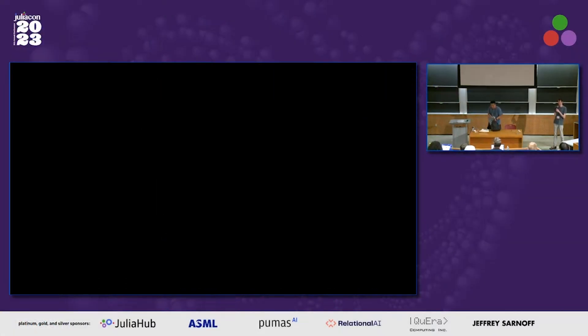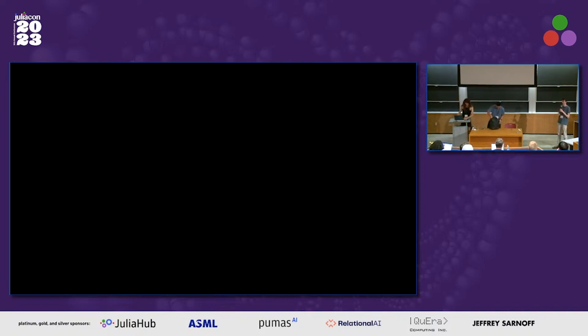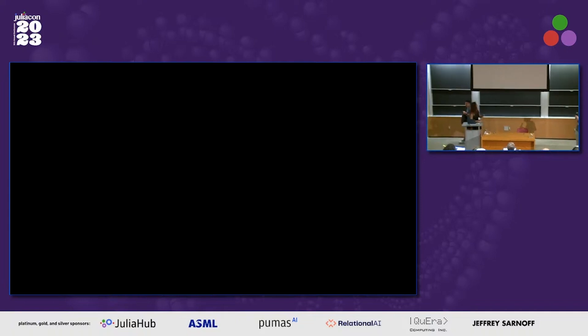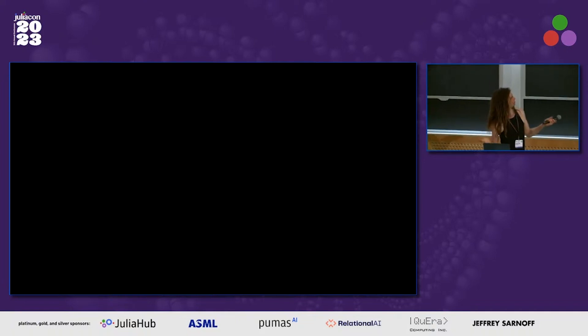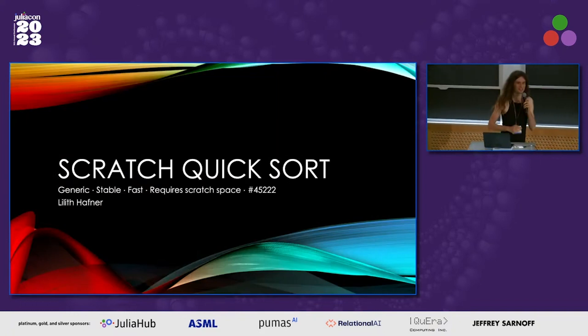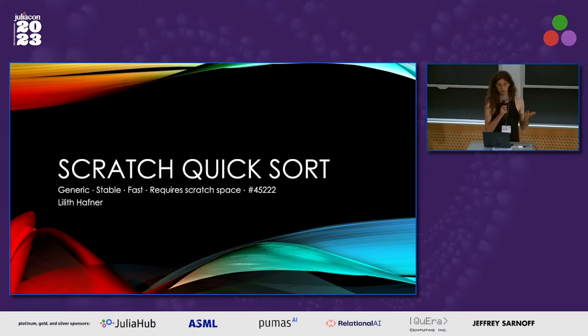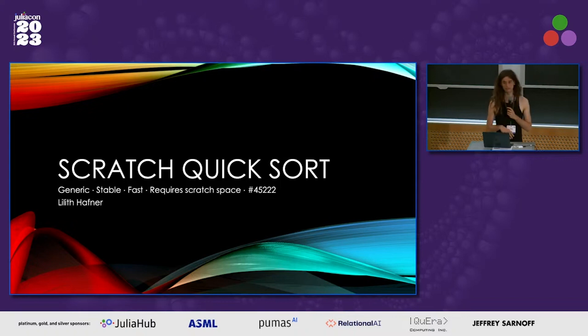Believe it or not, Lilith is back. It's not a misprint. We got a teaser earlier about this scratch quicksort algorithm and now we're going to find out what it is. So, scratch quicksort — it's like a variation on quicksort. It's often, even usually, faster than quicksort, and it's stable and comparison-based, so it just works for everything. It's not a special case thing, and it requires scratch space. That's a drawback, but I think it's worth it.